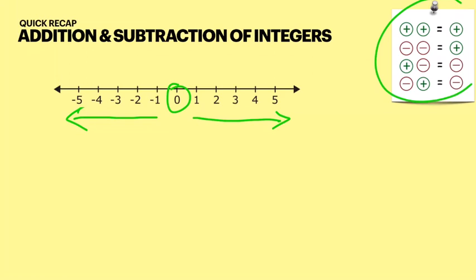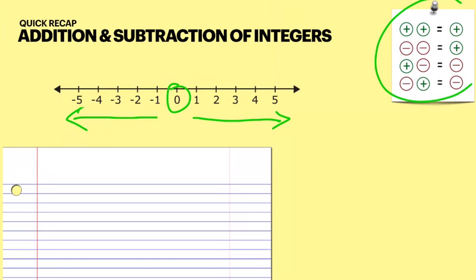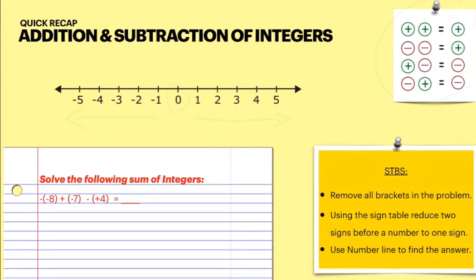Let's take an example. Solve the following sum of integers. These are the steps to build skills. Step one: remove all brackets in the problem. Wherever you see a bracket, remove it. Rewrite the whole question without brackets — so we write minus minus eight, plus minus seven, and minus plus four.